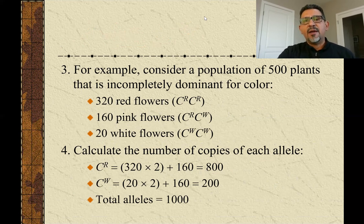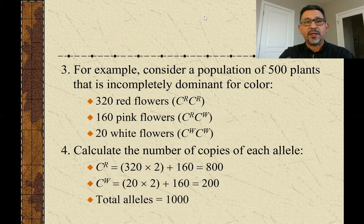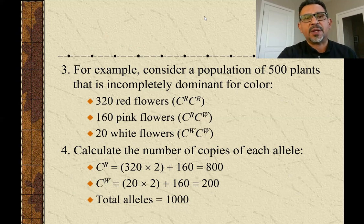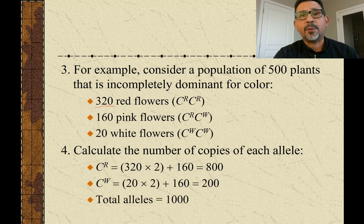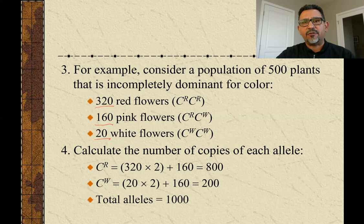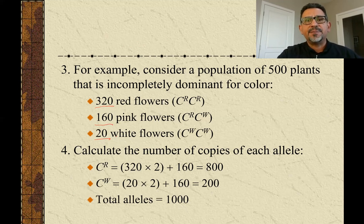Consider that we have a population of 500 plants like the snapdragons we talked about in Bio 211. With snapdragons, red is not completely dominant over white and white is not completely dominant over red. It's a case of incomplete dominance, where crossing a red flower plant with a white flower plant produces heterozygous offspring that show pink flowers. In this population of 500 plants, 320 are producing red flowers, 160 produce pink flowers, and only 20 are producing white flowers. This is the result of a survey — someone going to a garden, finding 500 plants, and counting how many produce each flower color.